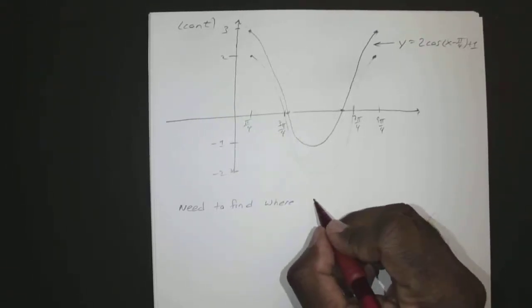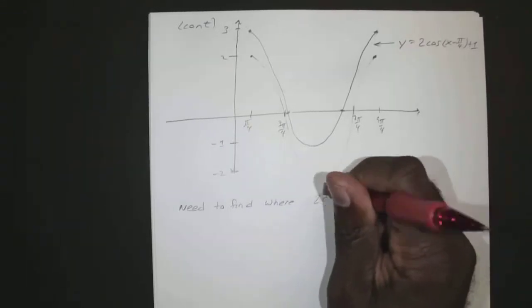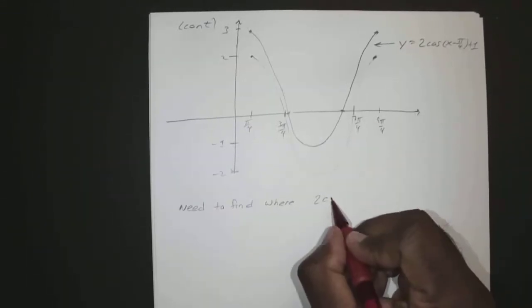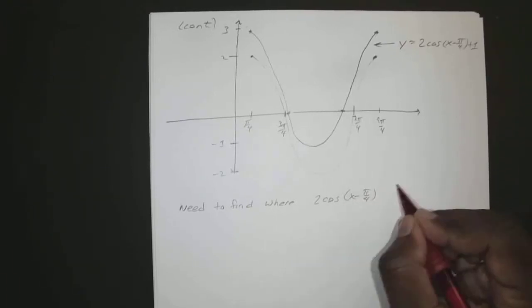All right, so we need to find where 2 times cosine of x minus pi over 4 plus 1 equals 0.